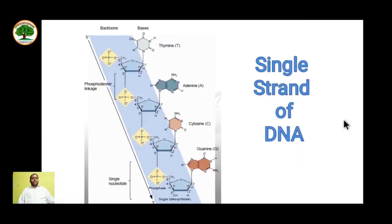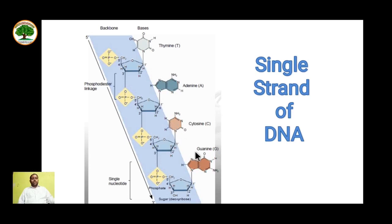Let's see how a single strand of DNA looks. This is a single strand of DNA having all four bases attached to deoxyribose sugar plus phosphate group. The linkage between the 3-prime hydroxyl group and the 5-prime phosphate group is called a phosphodiester linkage, which is the backbone of DNA. The nitrogenous bases are attached to carbon number one.